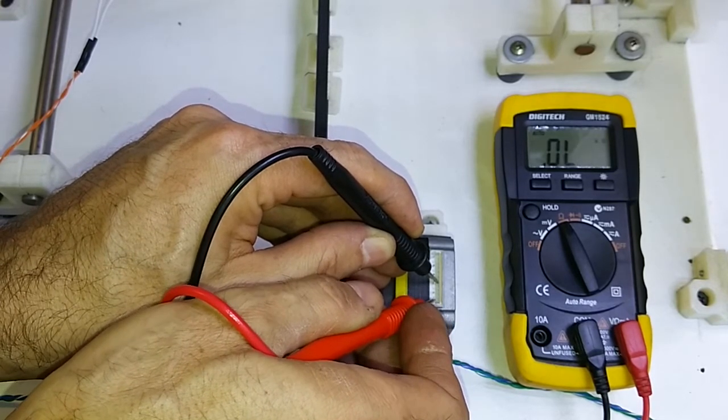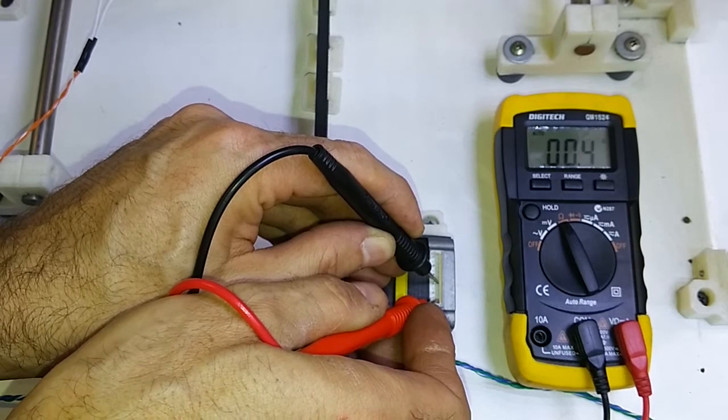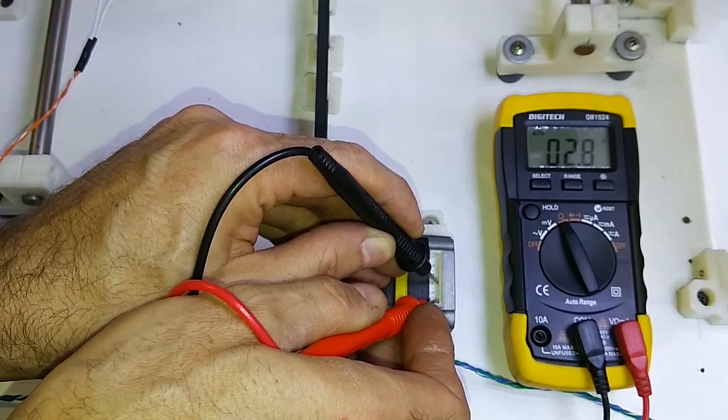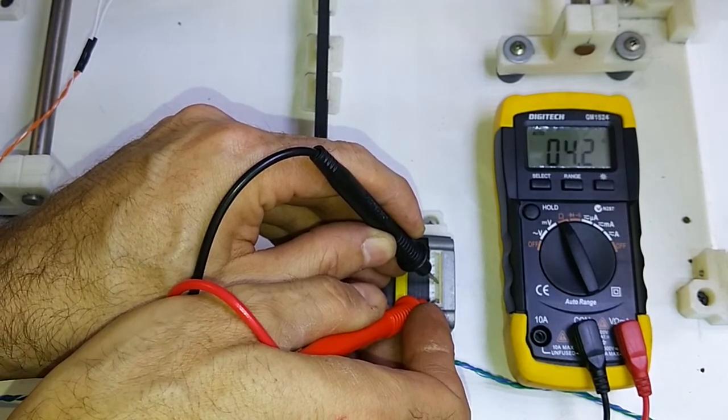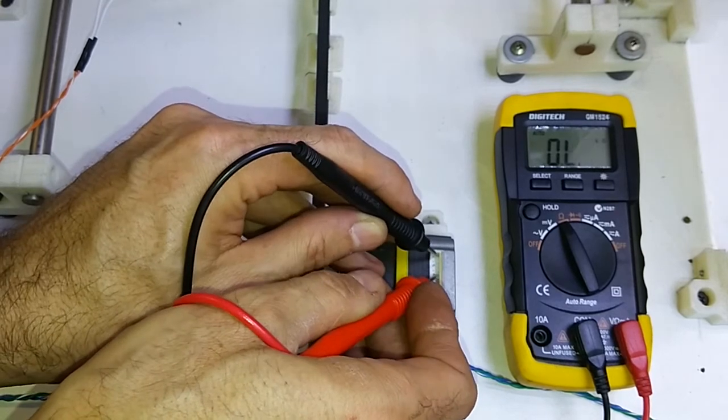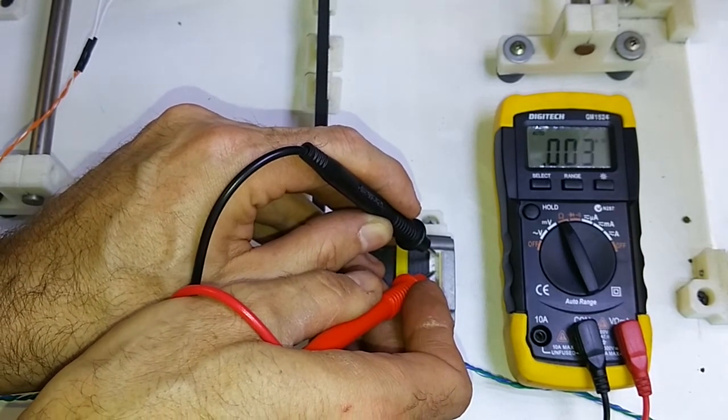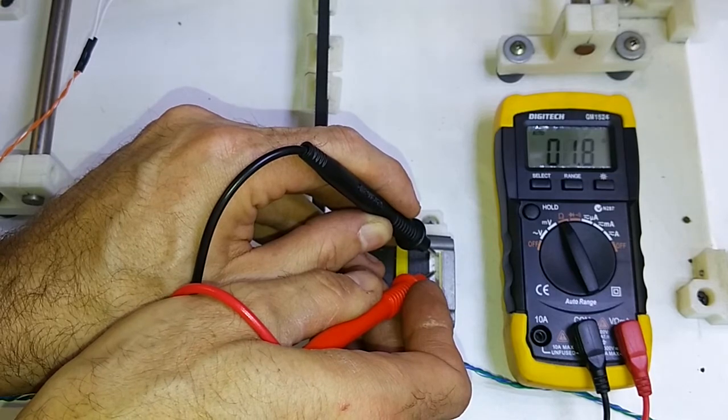We're not using the center tap, so you can ignore the center pin. We're just using the outside pin. So the two outside pins in the first set of three, and the two outside pins in the second set of three. Those are the four wires we're going to be using.